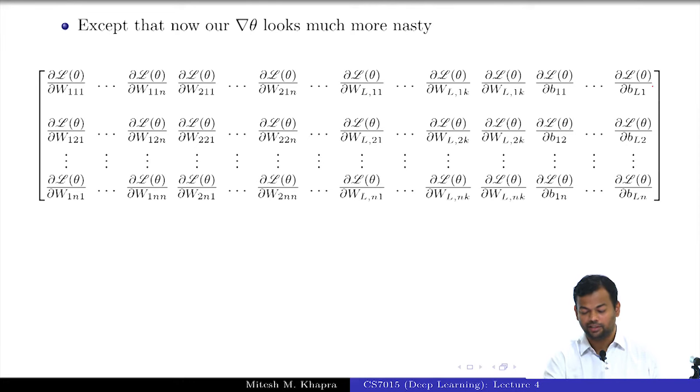After this, what is remaining? Biases. You have b_{1,1} to b_{1,n}. The last layer has only k parameters. Is this clear? These are all the partial derivatives that you need. You do not need to worry about taking a partial derivative with respect to a matrix; it just boils down to taking the partial derivative with respect to all elements of the matrix.